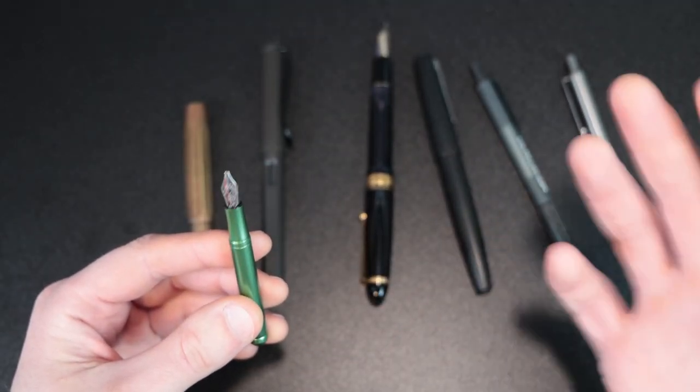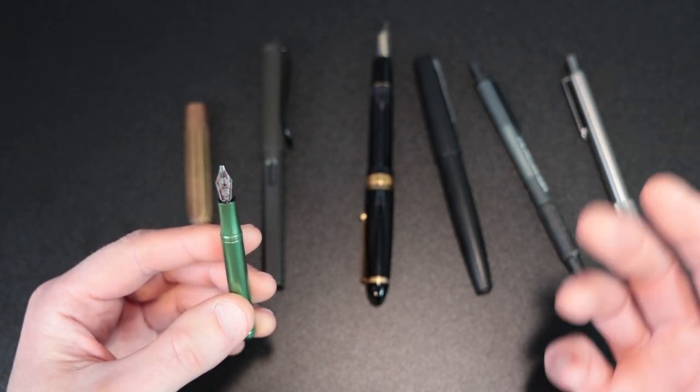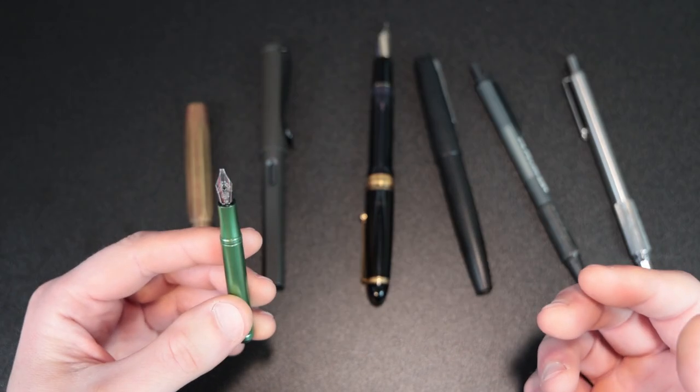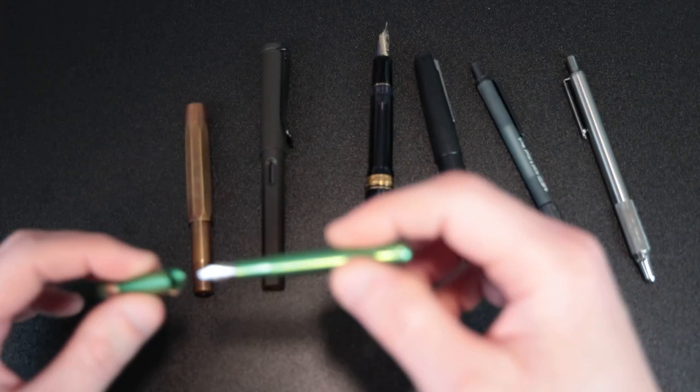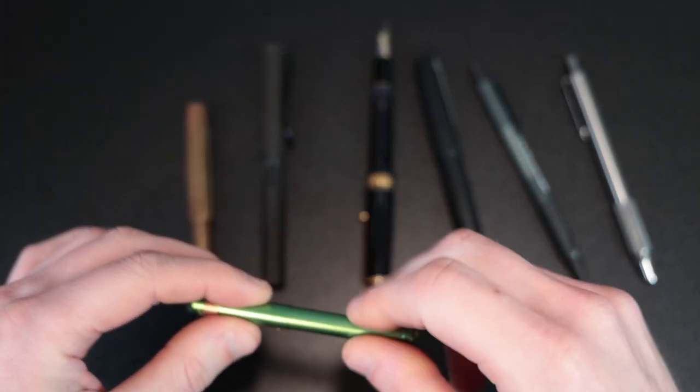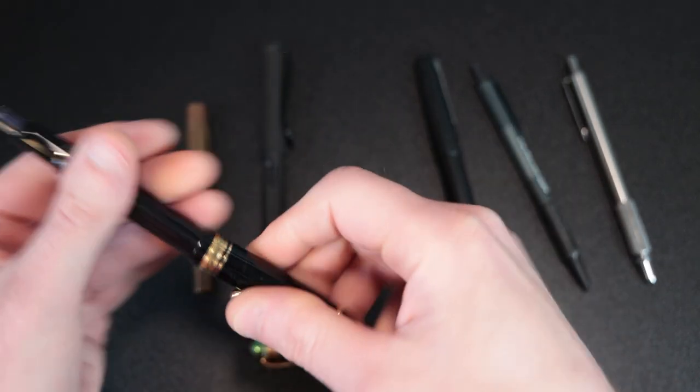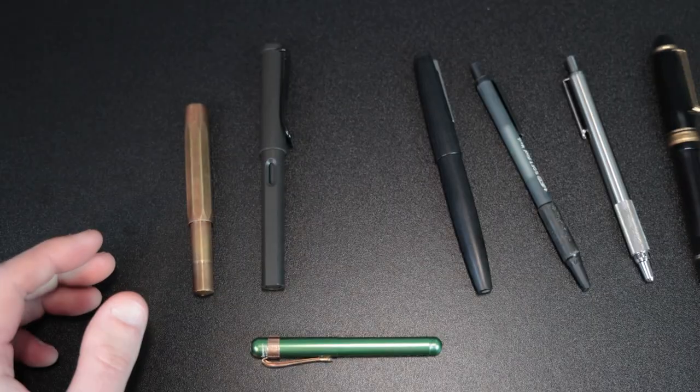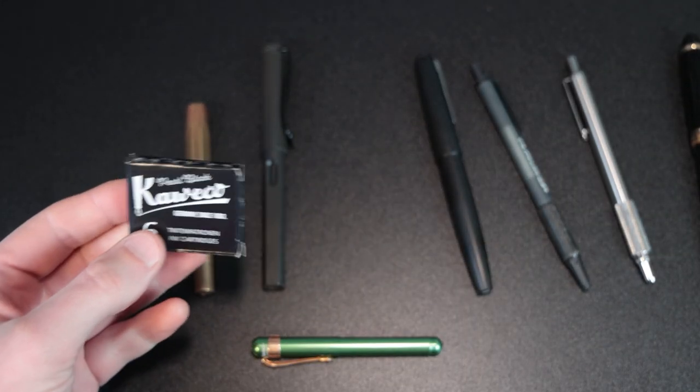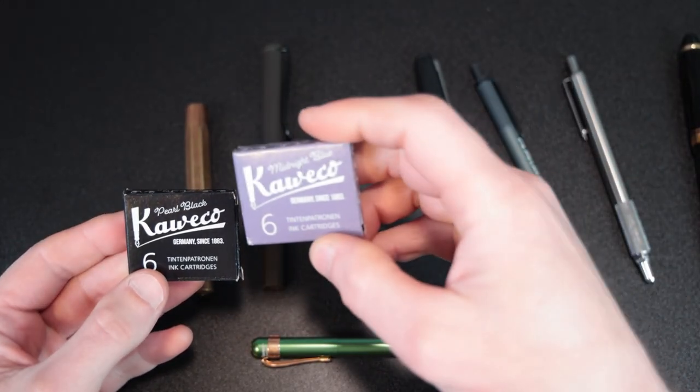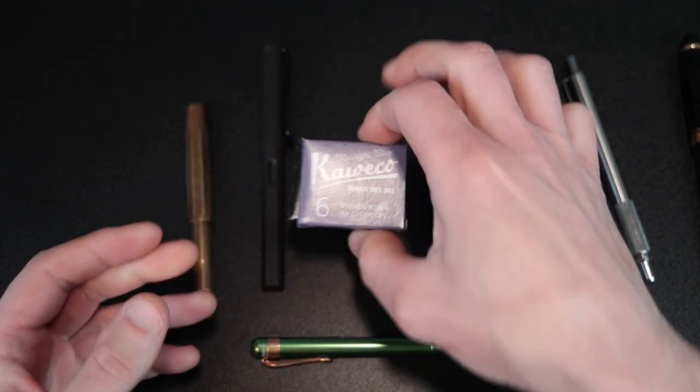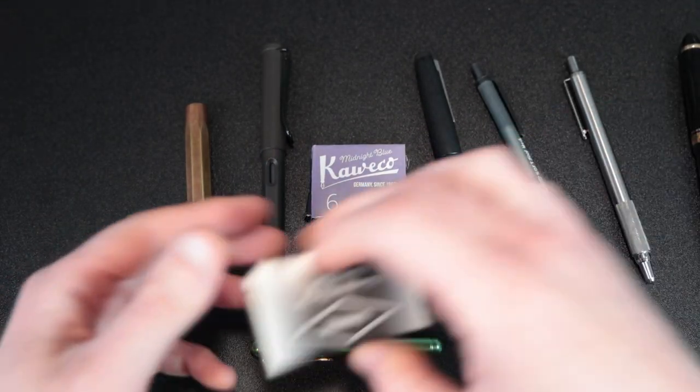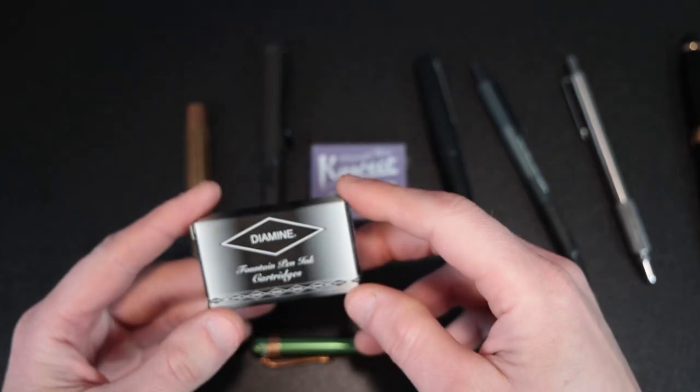You can purchase these with the steel nib in extra fine, fine, or medium. As I said, I got it in fine, but then I placed the 1.5 millimeter stub in there. In addition to the Caveco ink cartridges that you can use, like so. Here's a pearl black. Here's the midnight blue.